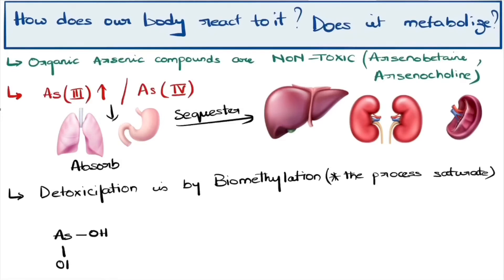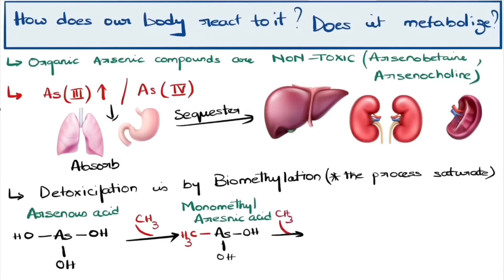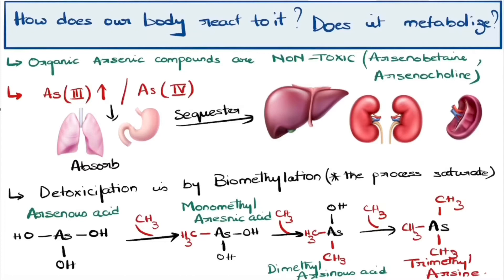Let's take an example here. We have taken arsenous acid, which is a trivalent arsenic. It gets a methyl group during the second phase of biotransformation and forms monomethyl arsenic acid. Later the methylation process repeats and forms dimethyl arsenous acid and later forms the end product trimethyl arsenic. Here the metabolized dimethyl arsenic is one of the major metabolites found in urine.